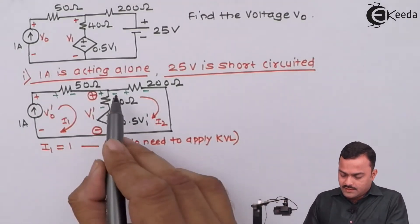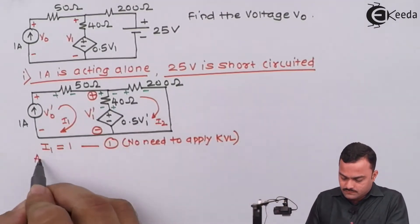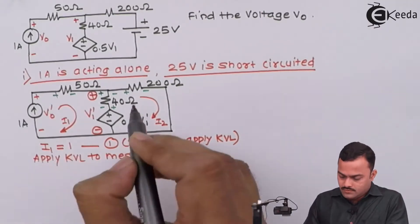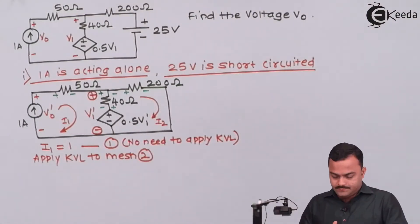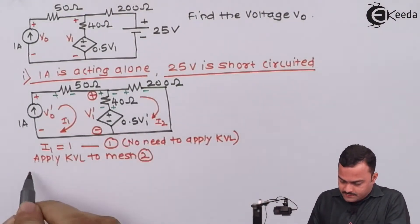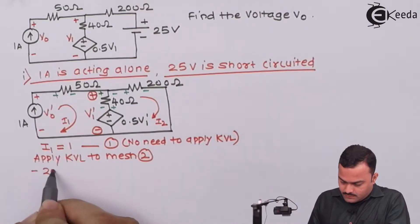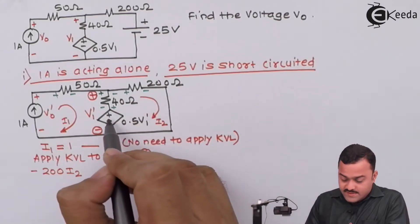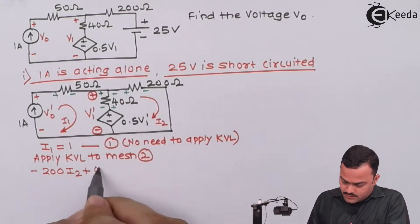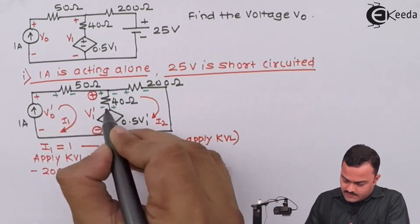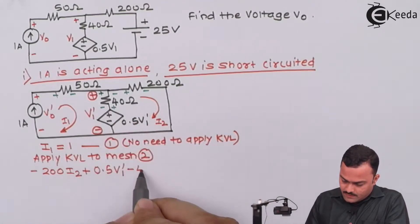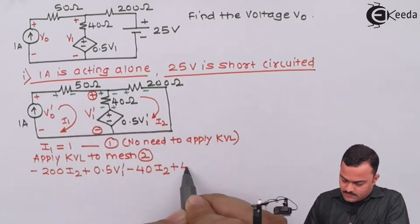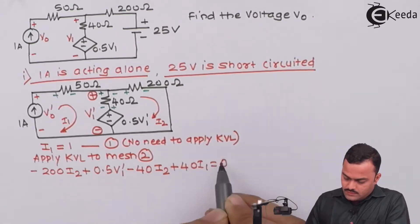Now let's apply KVL to mesh 2. Following the sign convention: minus 200 i2 plus 0.5 V1' plus 40 i2 minus 40 i1 equal to 0. This is the KVL equation for mesh 2.